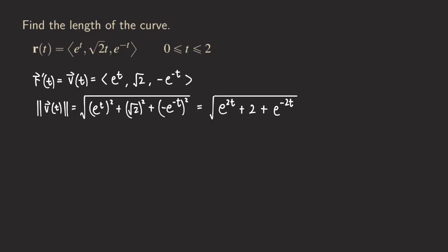Now let's recall the formula for the length of a parametrized curve: it's the integral from a to b of the magnitude of the velocity function dt. That means our expression e^(2t) + 2 + e^(−2t) is our integrand.